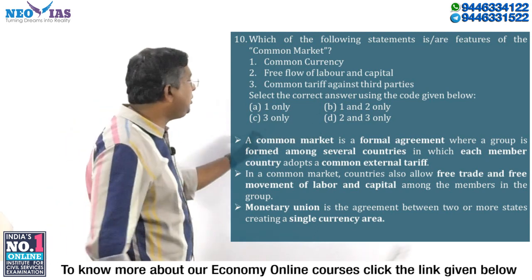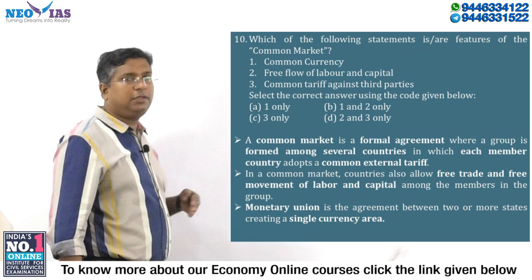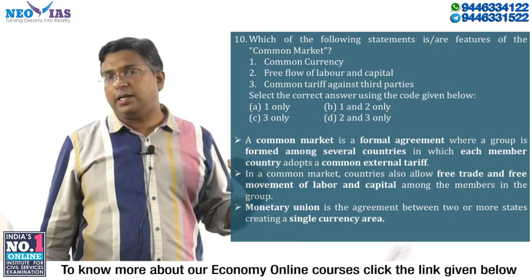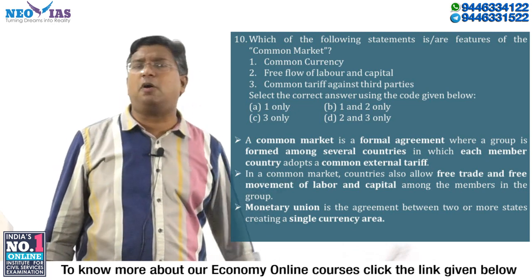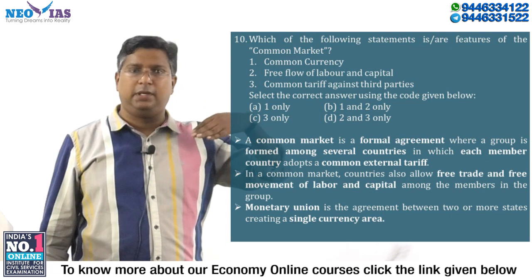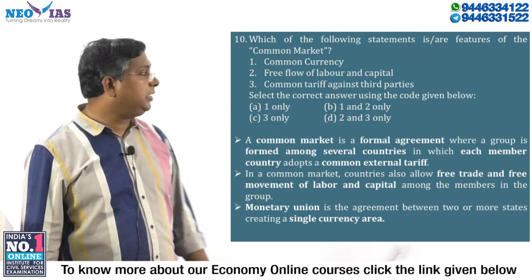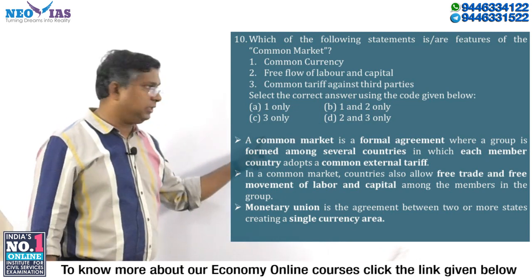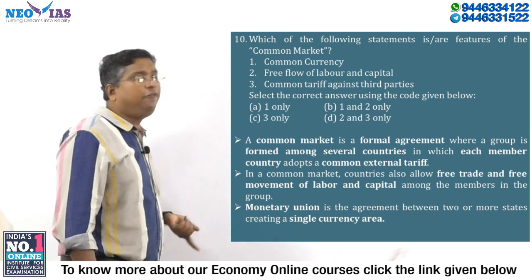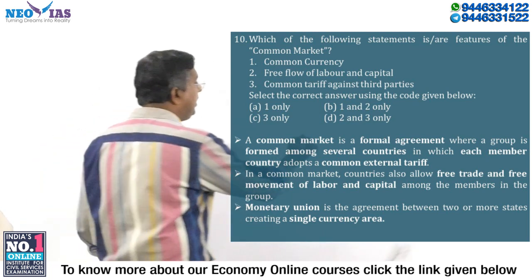Looking at the remaining choices, the third statement is correct — member countries have a common tariff against third parties, i.e., countries not part of the common market. And the second statement is also correct — in a common market there is free flow of labor and capital. So statements two and three are correct, and the answer is D.